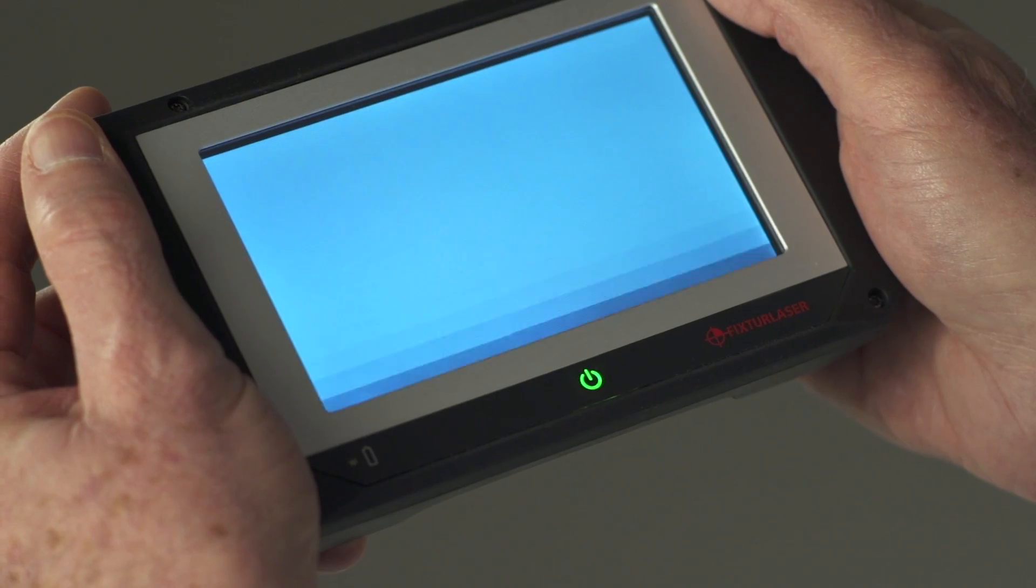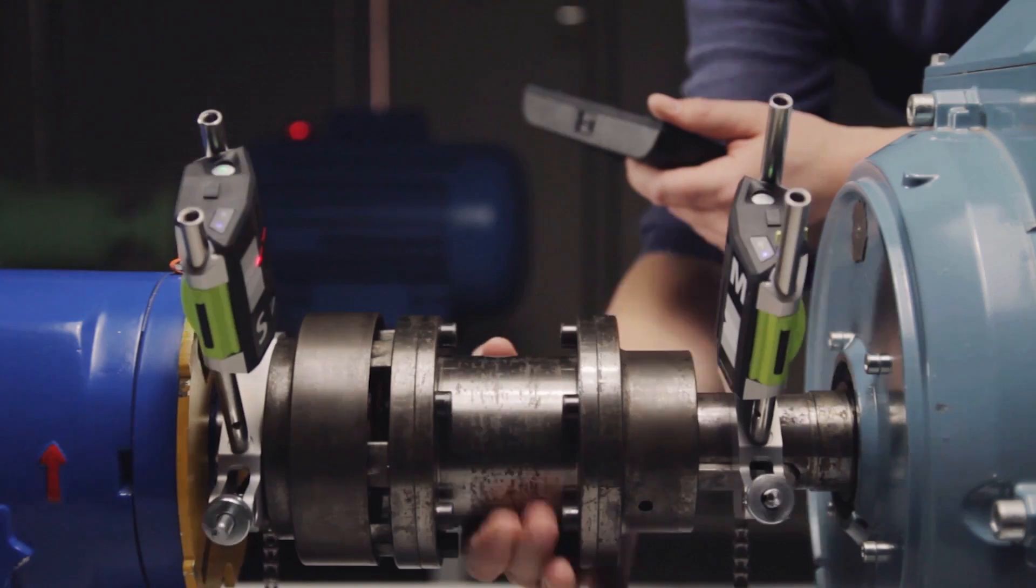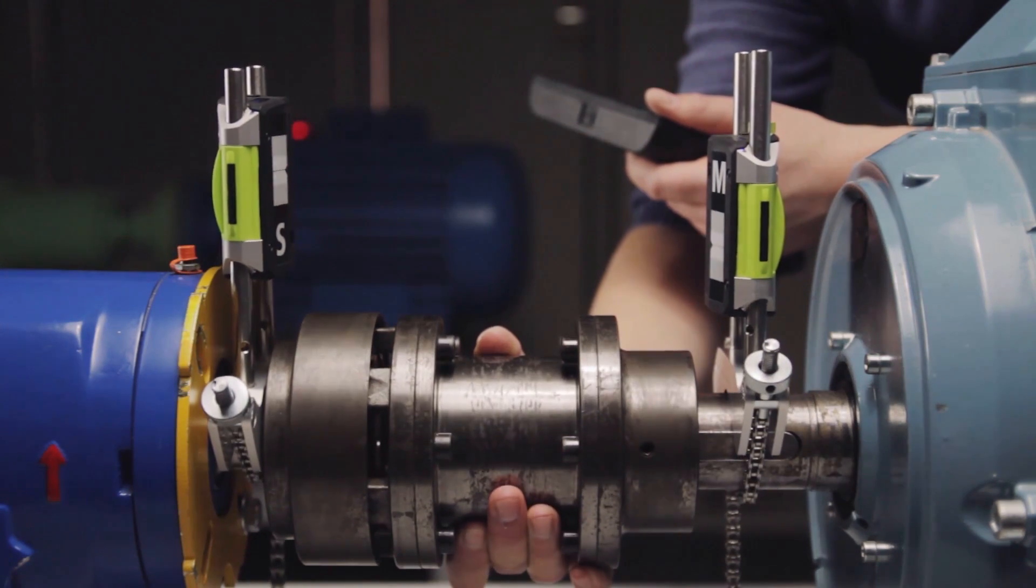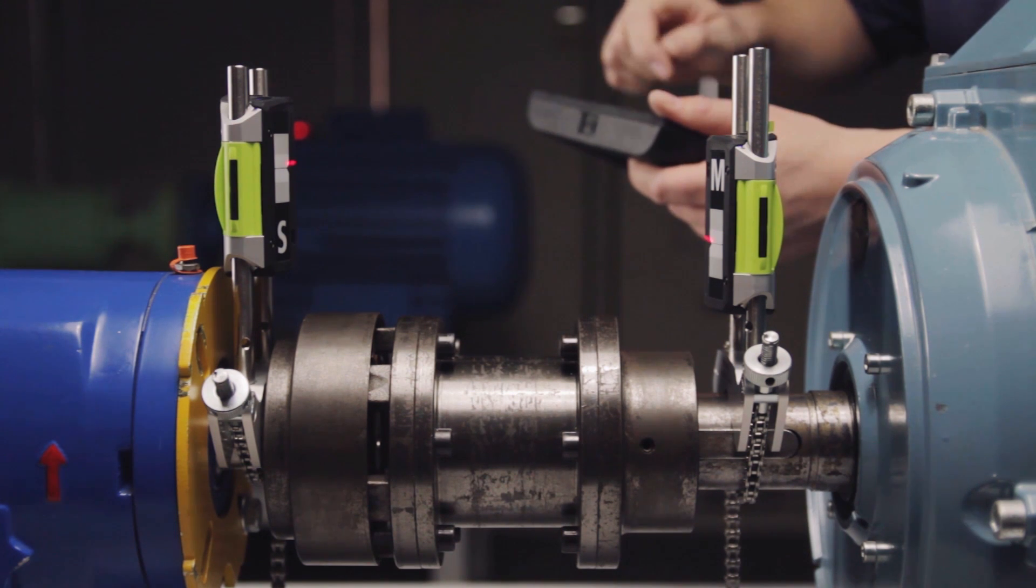You can hold Evo's display unit with just one hand. Its laser detector heads are the smallest on the market, allowing you to mount them in the tightest spaces.